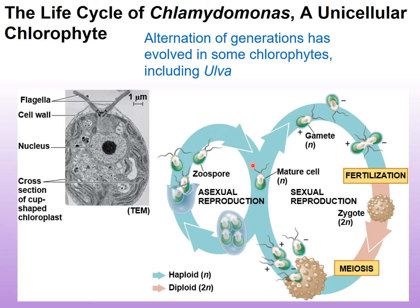Chlamydomonas can also reproduce sexually. We have a mature cell that produces two different mating types — plus and minus — each considered a gamete because they will eventually fuse. They are opposite mating types, and we'll see this again when we move into the fungi groups. Once they fuse, this is called fertilization, and a zygote develops. The cells within the zygote undergo meiosis to produce more gametes, which are released as a mixture of the original mating types — plus and minus. This is sexual reproduction, which increases variation in populations.